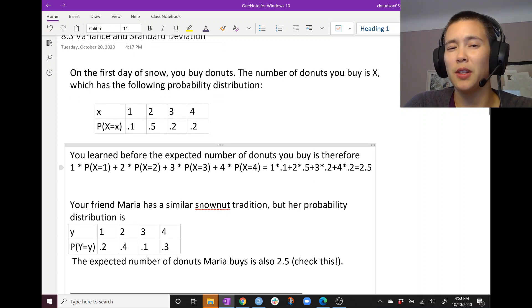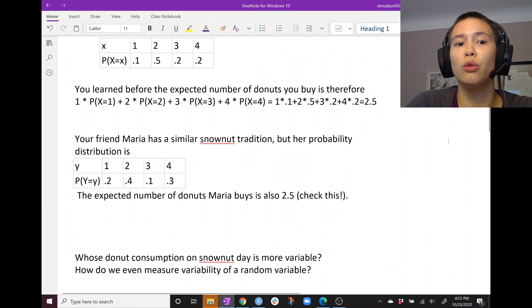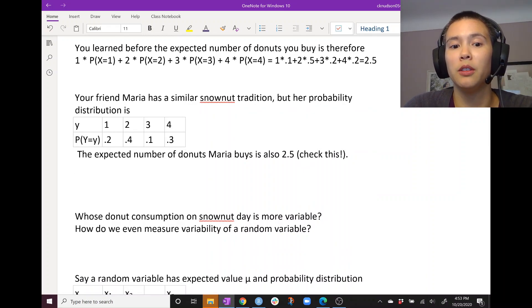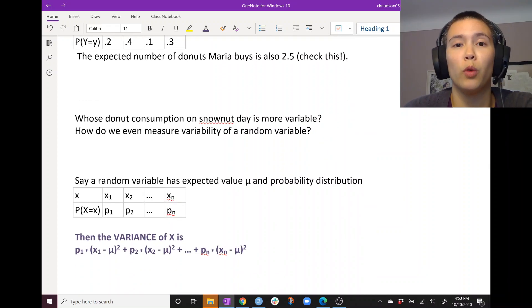So we know that these are different. Let's look at one different measure. Let's look at variance. So whose snownut tradition is more variable? And how do we even measure this variability? We'll do this with variance. So what is variance?